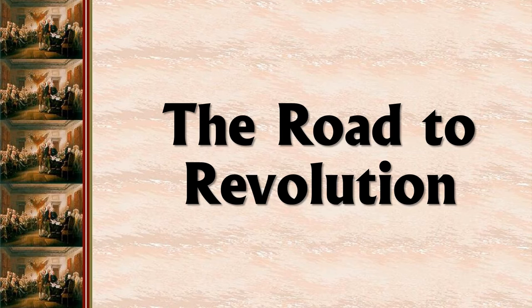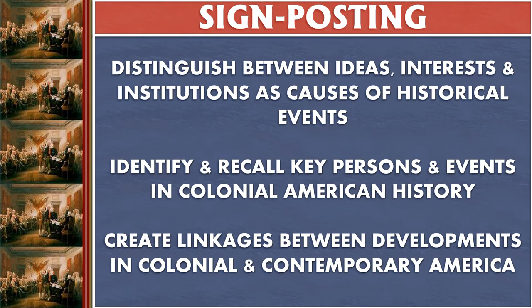So we're going to talk about the causes of revolution. Today we're going to distinguish between different kinds of causes. Some causes are ideas — the ideas that people have in their head. It would never occur to people that winning independence and democratic government would be something that you would want before there's an idea of democracy and separation of powers and many of the ideas around the Enlightenment. So what influence did these ideas have upon the people and their desire to try to win their independence from England?